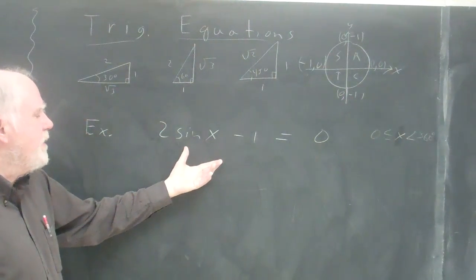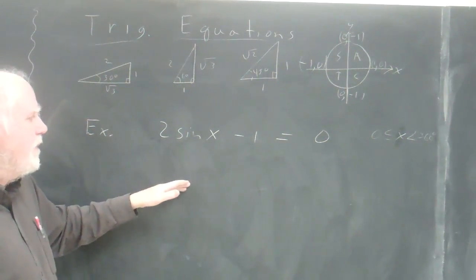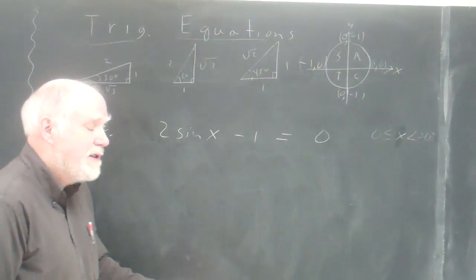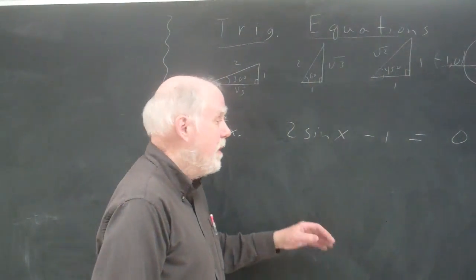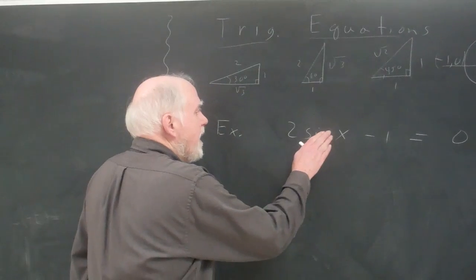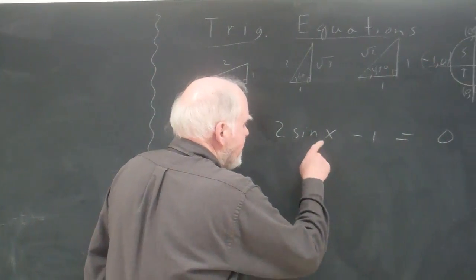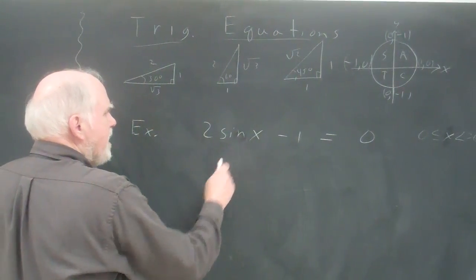The strategy is to take any trig equation we have and reduce it down to a very simple one where you have like the sine of x equals some number, the cosine of x equals some number, and then we can solve it. So when I look at this thing, I say, well, obviously what I want to do is I want to solve for sine x.